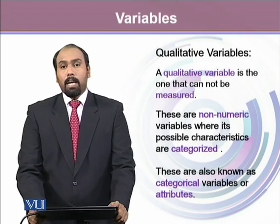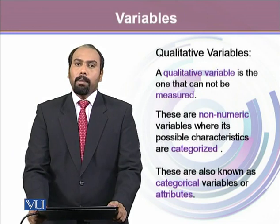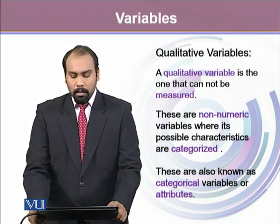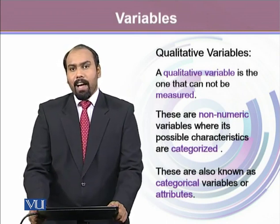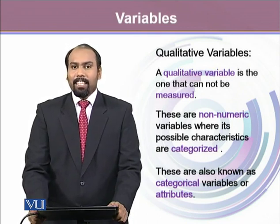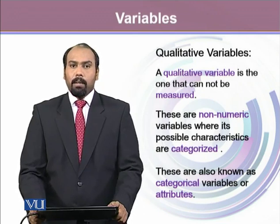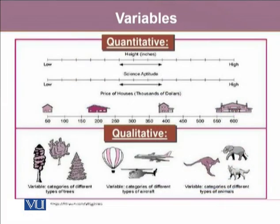Qualitative variable is another type of variable — one that cannot be measured in numerical form. These are non-numeric variables where each individual value is a category, so they are also known as categorical variables or attributes. For example, height measured as low to high, science aptitude as low or high, and prices of houses are all quantitative variables that can be numerically measured. Whereas categories of different types of trees, aircraft, or animals are qualitative variables.